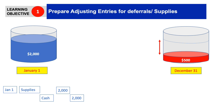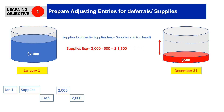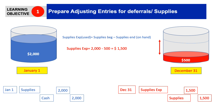To find the value of my supplies expense, I'll use the formula: supplies expense equals supplies at the beginning of the period minus supplies at the end of the period. So supplies expense equals $2,000 minus $500, which is $1,500. Now it's time to make my adjusting entry. The date is December 31, and I'll debit supplies expense by $1,500 and credit supplies by $1,500.